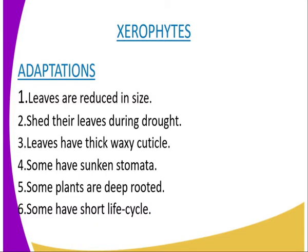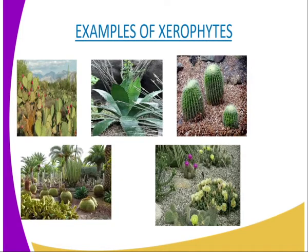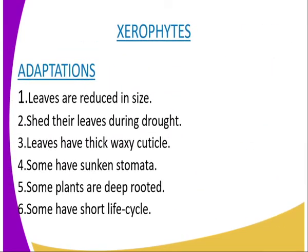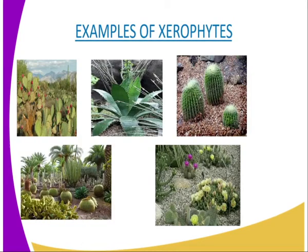Because of those conditions, xerophytes have developed mechanisms of surviving. The adaptations include: first, leaves are reduced in size, such as the scale-like leaves of whistling pine, as shown in our diagrams on screen. Second, shedding of leaves during drought to reduce the surface exposed to transpiration. Third, leaves have a thick wax cuticle to minimize the rate of cuticular transpiration.